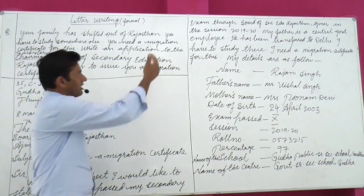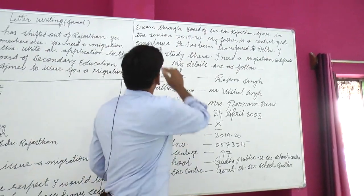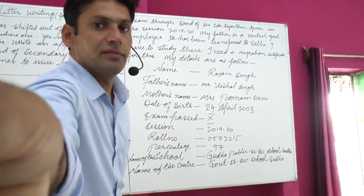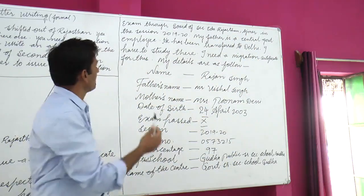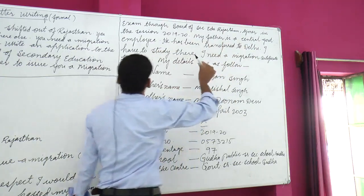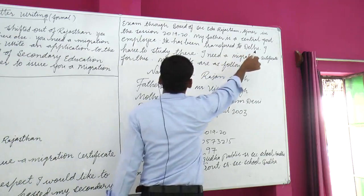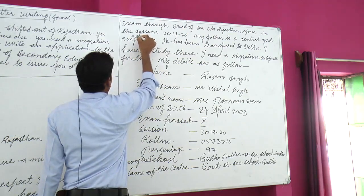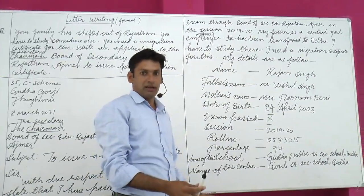I have passed my secondary exam through the Board of Secondary Education, Rajasthan, Ajmer. 'Through' means 'by way of' or 'via.' Secondary means 10th standard. You also need to mention the session: in the session 2019-20. My father is a central government employee — 'employee' means karmachari (worker/staff member).